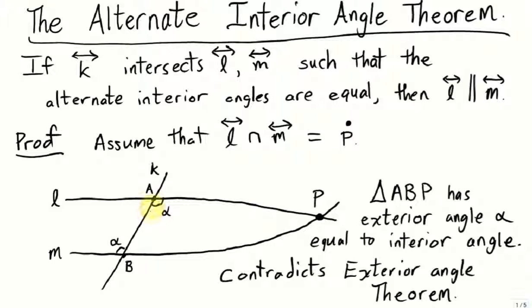In that case, we actually have a triangle, where the transversal intersects lines L and M. Let's call those points A and B respectively, and let's say they intersect at this point P. We have a triangle ABP.